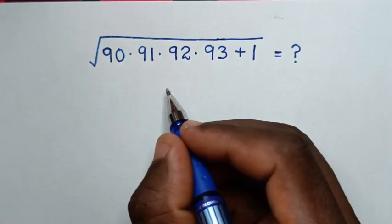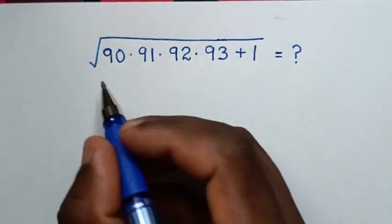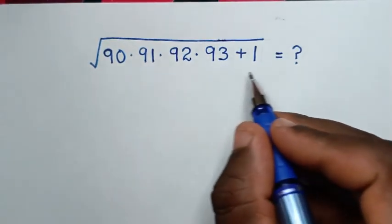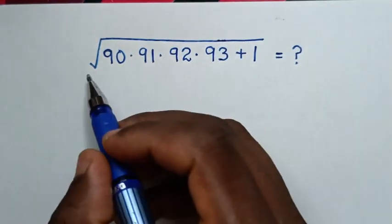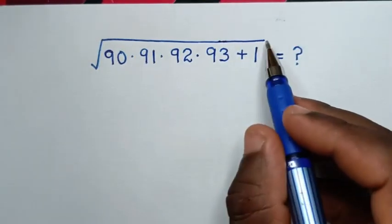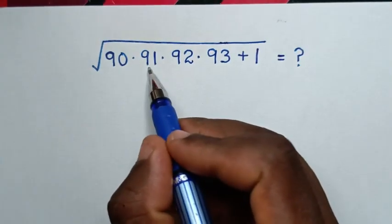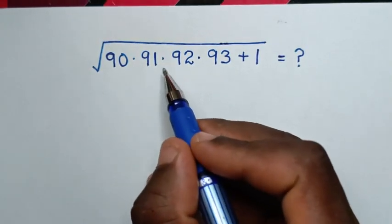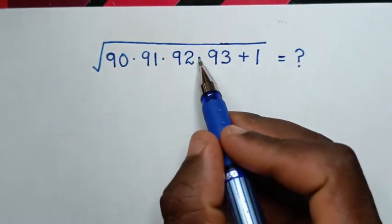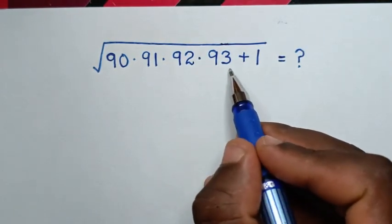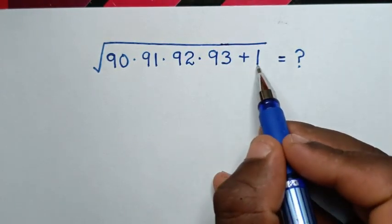Hello, you are welcome to solve this math problem, which is the square root of 90 times 91 times 92 times 93 plus 1.